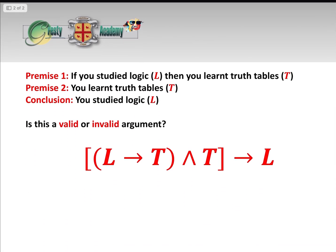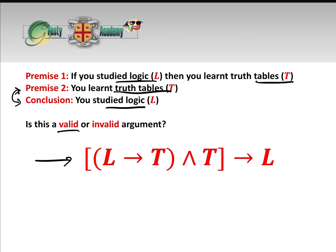Now let's have a look at one which is slightly different. What we've done here is flipped premise 2 and the conclusion around. Let's see if this is a valid or invalid argument. It's similar but not exactly the same. Premise 1 is the same: if you studied logic, then you learned truth tables. Premise 2 now is that you learned truth tables, and the conclusion is therefore you must have studied logic. Is this a valid argument — i.e., is this a tautology?